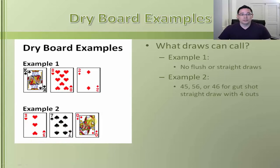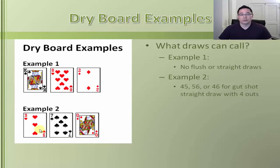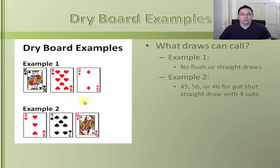Another example is Three of hearts, Seven of spades, and Queen of diamonds. What draws can call to try to hit on the turn? There are a few: four-five, five-six, and four-six — all going for a gutshot straight draw where each only has four outs. With four outs, that's only about 8% equity, making it extremely difficult to hit on the turn.